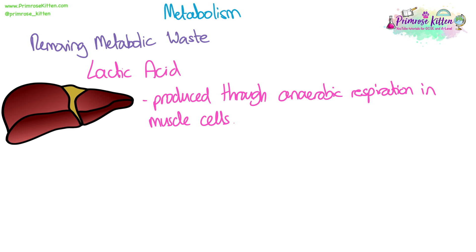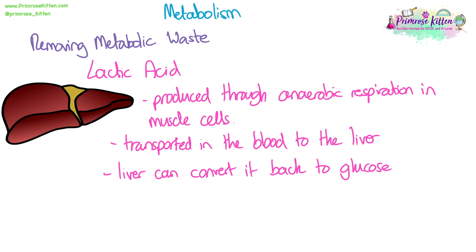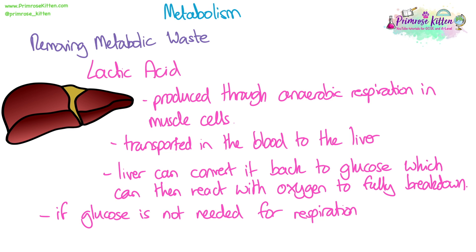Lactic acid is produced through anaerobic respiration in muscle cells. It can be transported in the blood to the liver, where it can react with oxygen and fully break down. The liver can also convert excess lactic acid back into glucose, which can then react with oxygen to be fully broken down. If we don't need that energy at that point, the liver can convert the glucose into glycogen and store it for when we do need it.